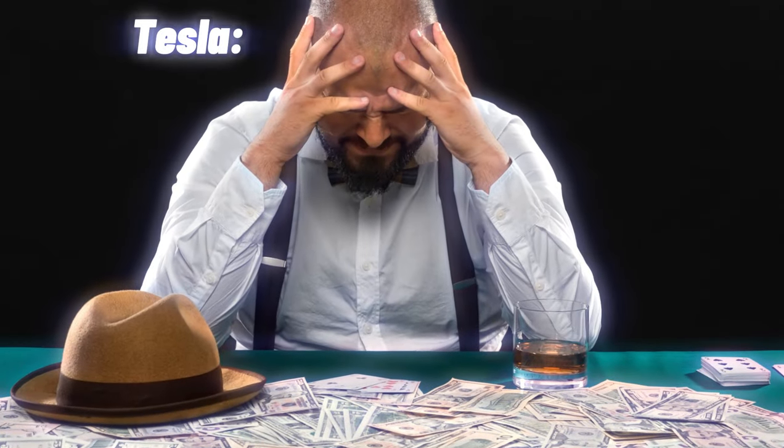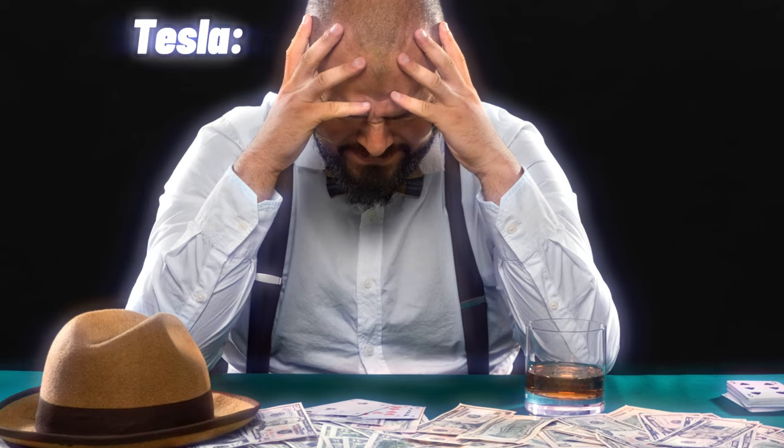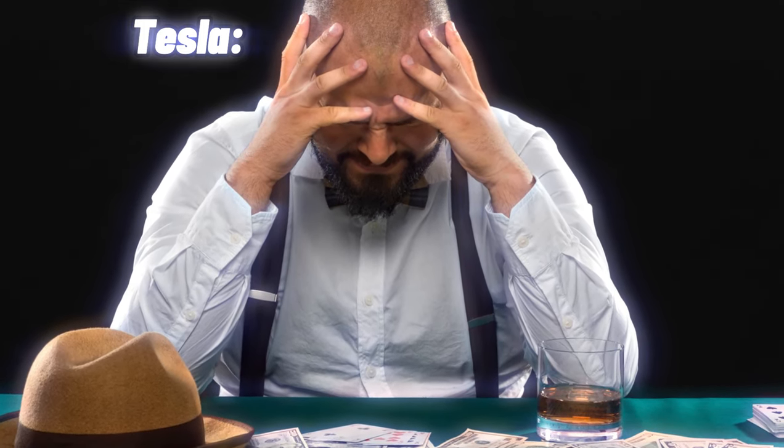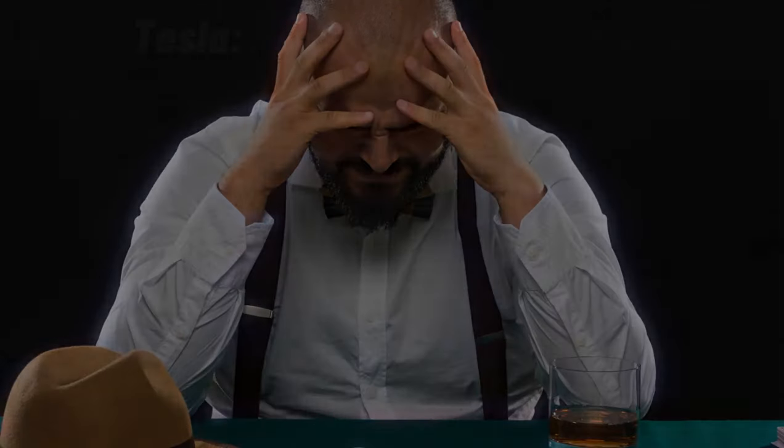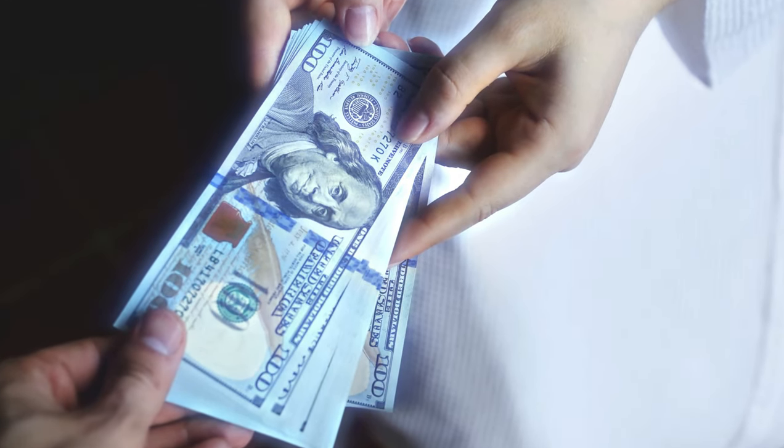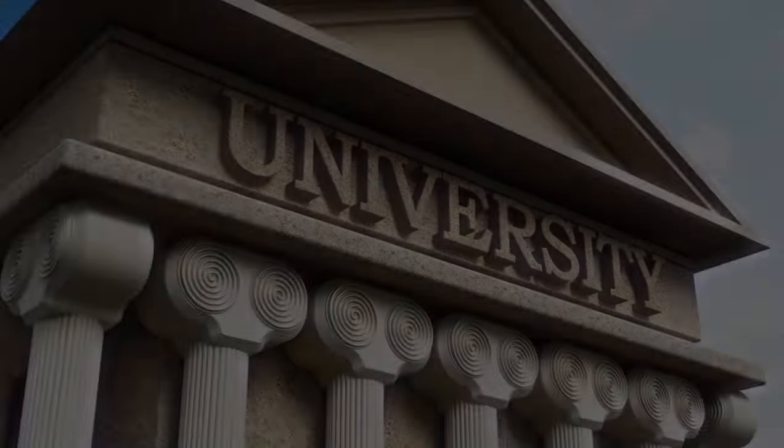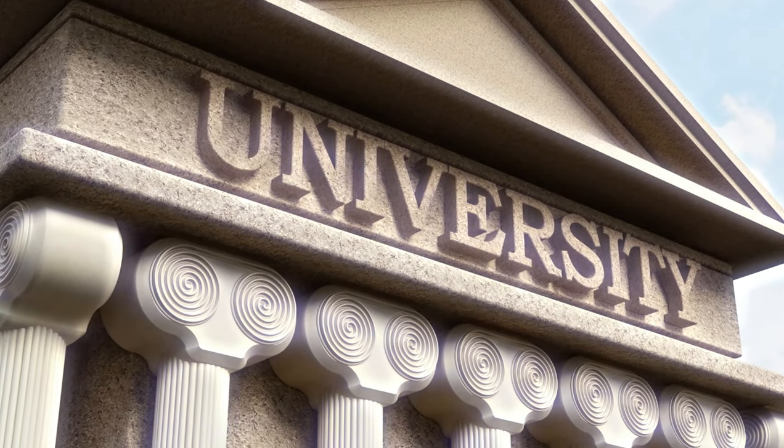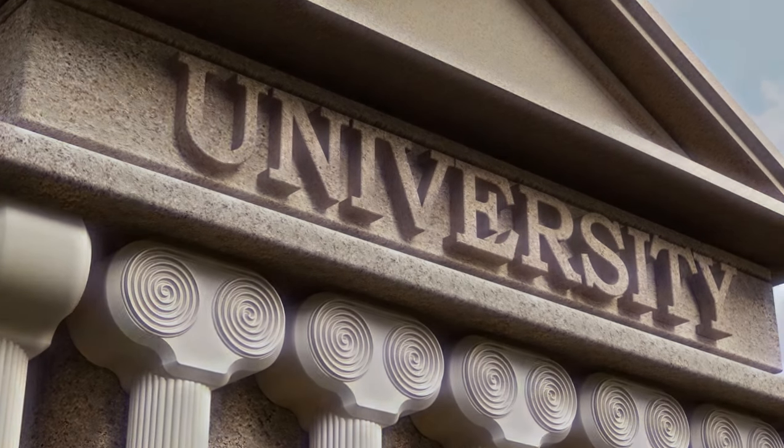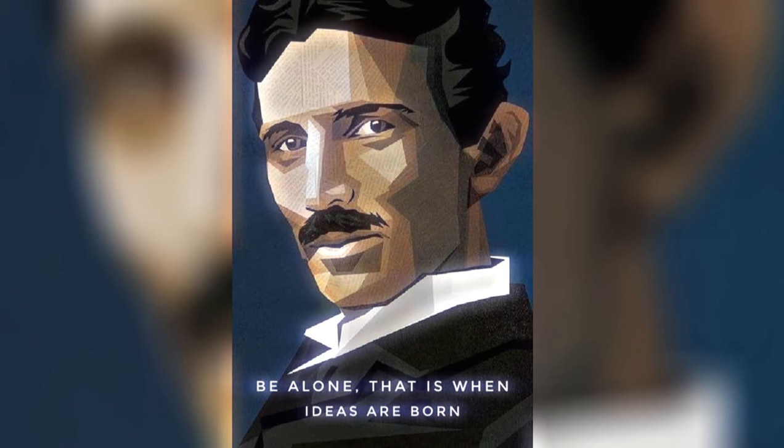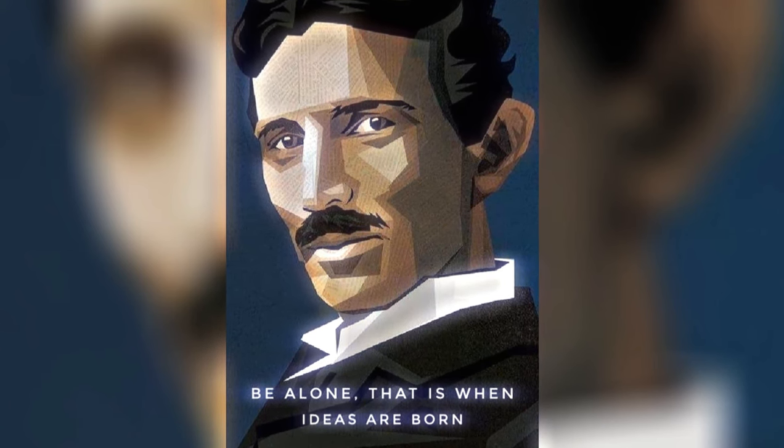Tesla loses his scholarship due to a gambling addiction. And in his third year, he loses all his allowances and scholarships at the gaming table. At one point, he even manages to win more than he had lost, sending money back to his family. But sadly, his university life comes to an abrupt end due to his addiction. In his last year, he cuts off all contact with his family and friends to avoid telling them he dropped out. The situation is so sudden that his friends assume he's dead.